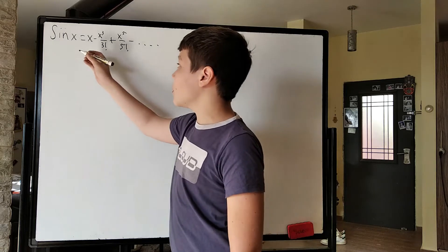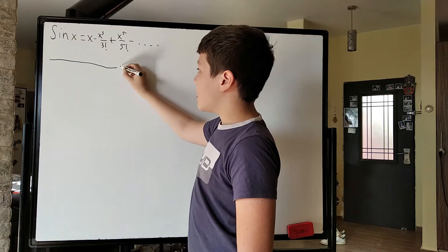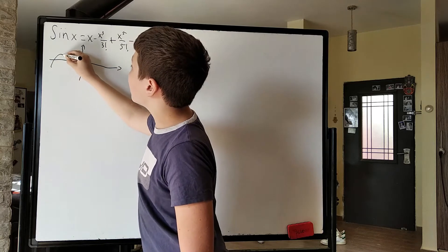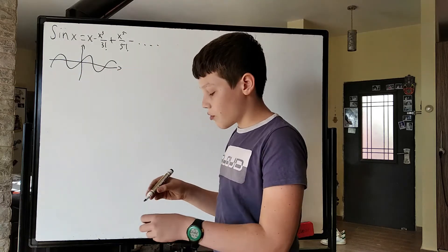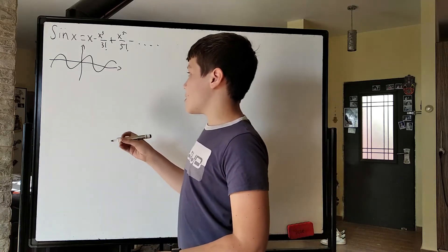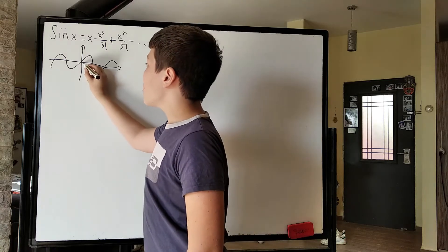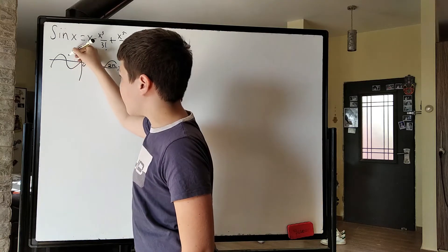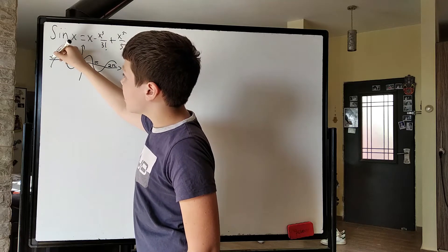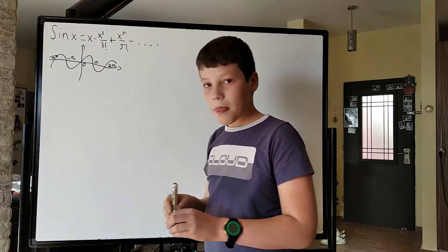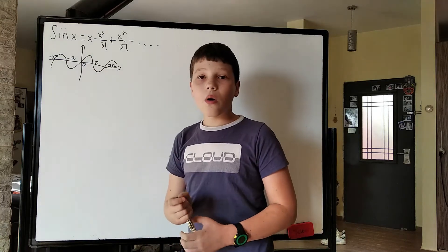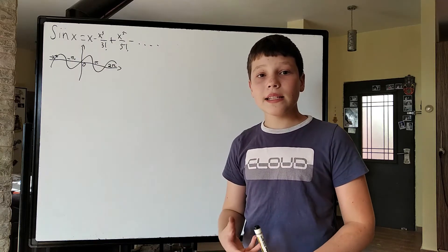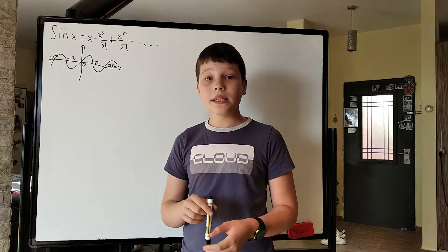We know that the function sine of x, if we draw it out, it will go like this — sorry for my bad drawing. The zeros of the function, when the function is equal to zero, are at zero, pi, 2 pi, and also the negatives: negative pi, negative 2 pi, and so on. And a way to write a function is also writing it as a product of x minus all of its zeros.